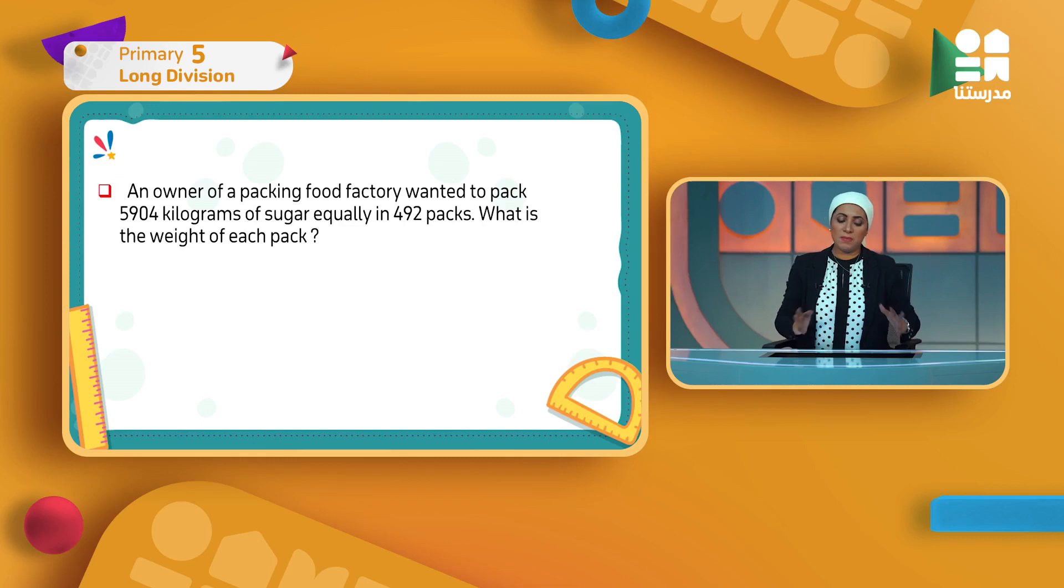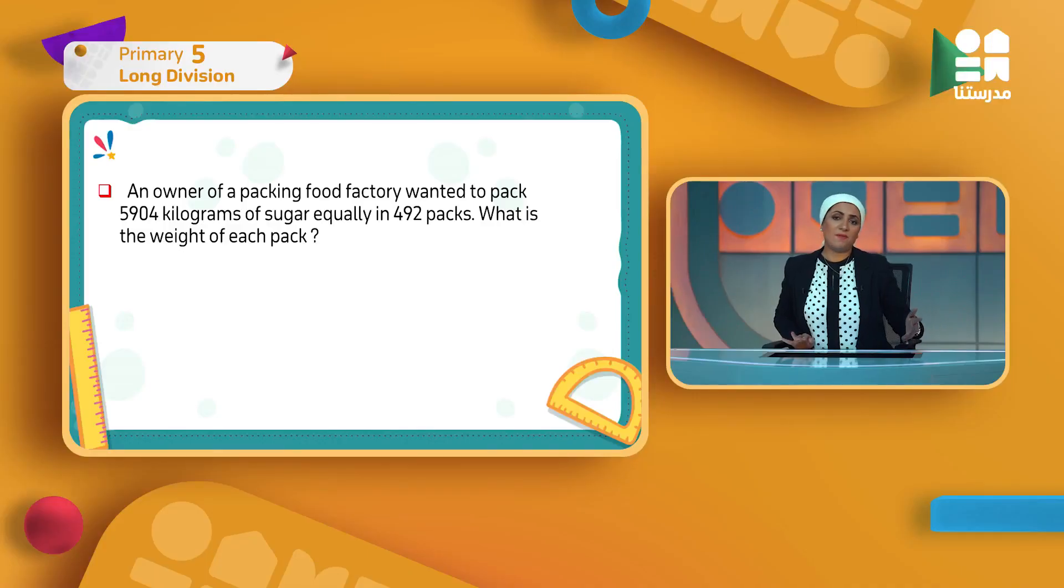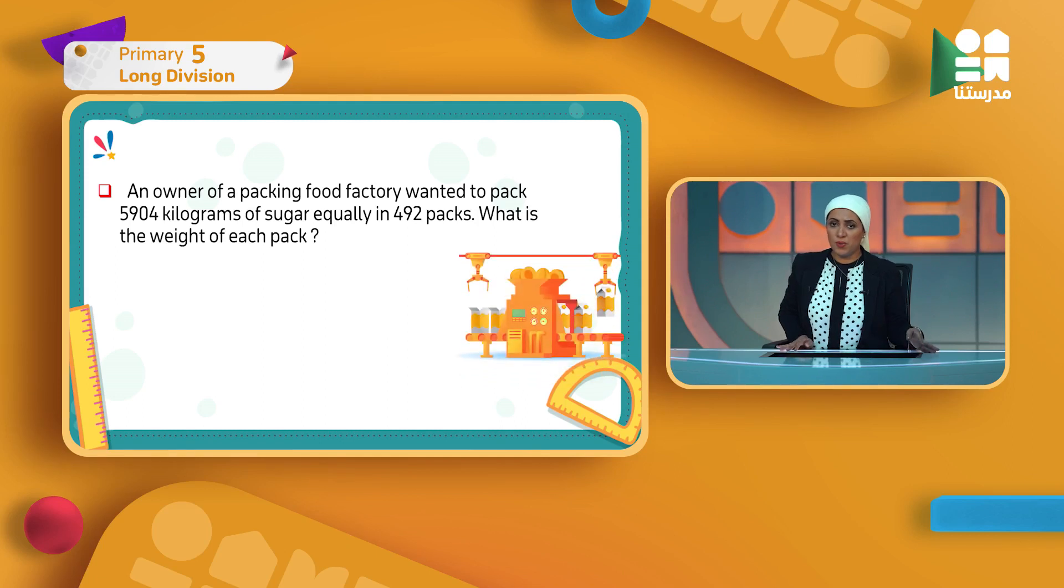Here is another example. The amount of sugar he has, he wants to know how many kilos will be in each bag. So I'll do 5904 divided by 492. 492 is my divisor, 5904 is my dividend. We will use the house method and follow the steps that we have just explained.